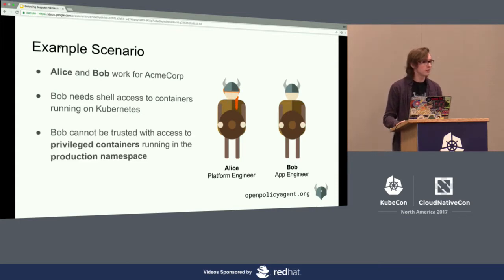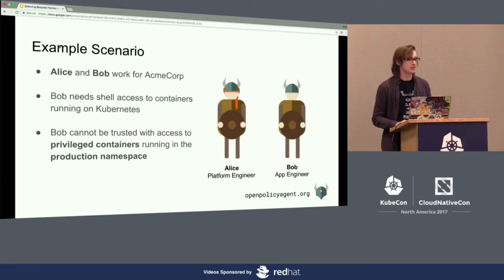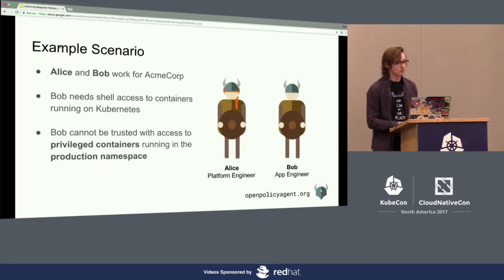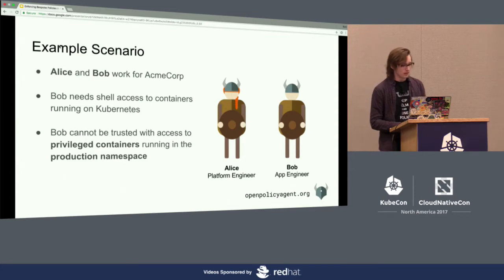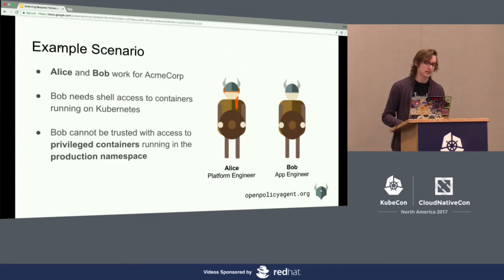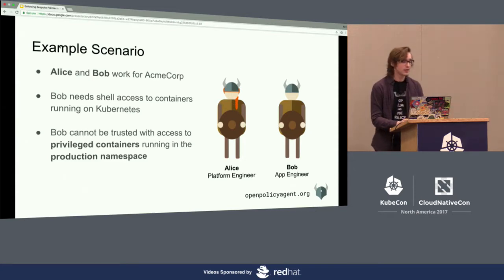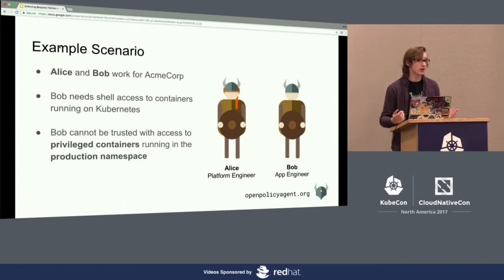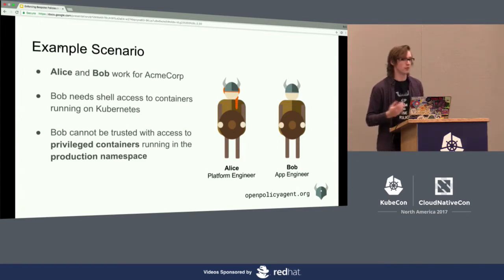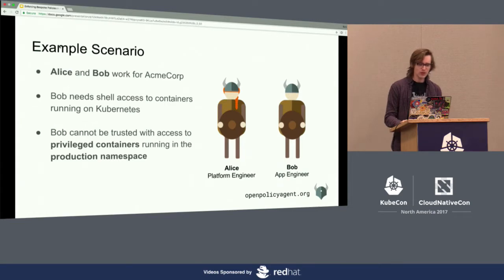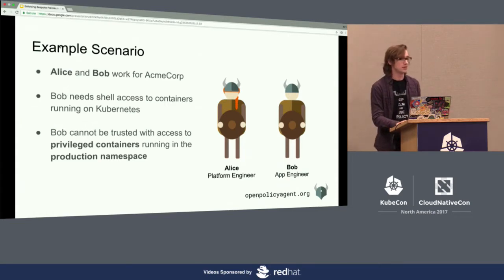The problem is that Bob cannot be trusted. He has introduced too many vulnerabilities and brought down the system too many times. Alice really needs a way to say Bob cannot get shell access to containers that are running in a privileged security context in a certain namespace — the one running all their production workloads. The question is: what can Alice actually do to enforce this policy today?